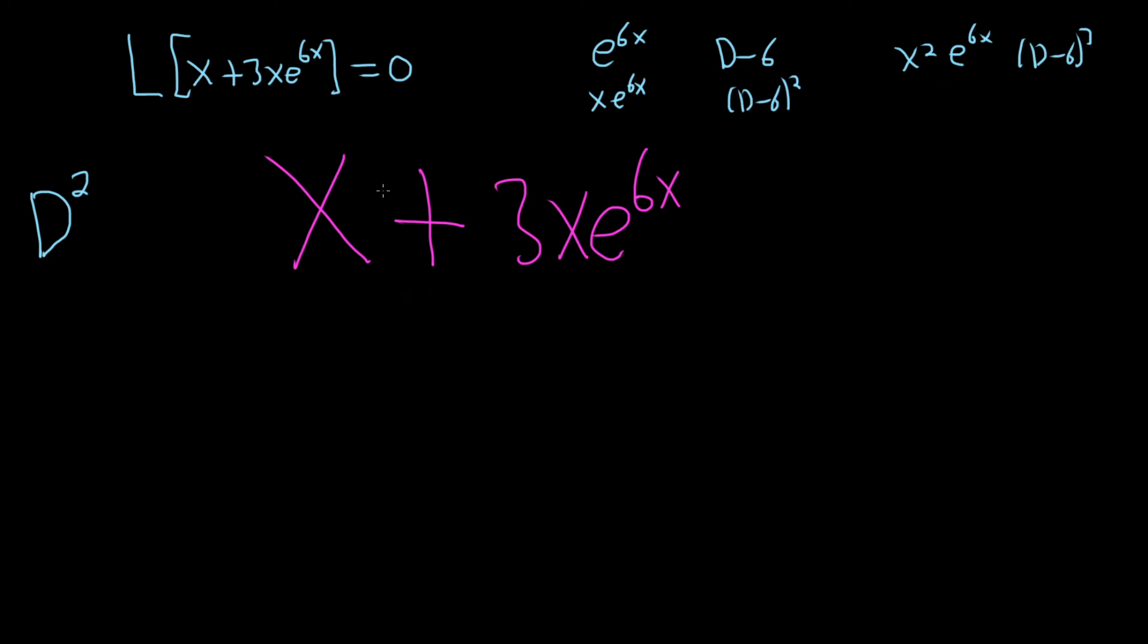Okay. So in this case, we're going to need two things. We're going to need this one and this one. So we need d squared and we also need d minus 6 squared. And these would be the annihilators for this function.